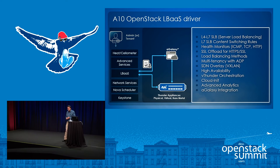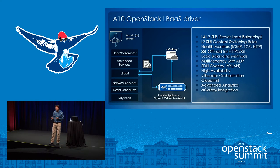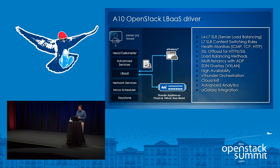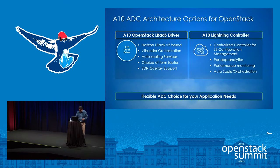The Aten LBaaS driver provides a lot of capabilities: Layer 4 to Layer 7 load balancing, Layer 7 content switching, and health monitors beyond what the standard LBaaS driver provides. We also have SSL offload capabilities configurable through the custom driver, enabling SSL with certificates and keys through the LBaaS GUI. We have multi-tenancy support and Thunder orchestration through our LBaaS V2 driver.